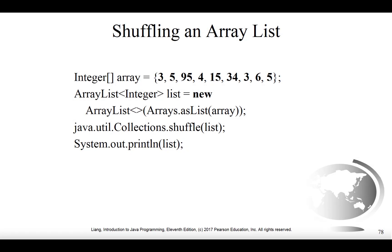Finally, we demonstrate one last method in Collections — the shuffle method. This program is essentially identical to the previous sort example, except instead of Collections.sort we use Collections.shuffle. No output is shown on the slide because shuffle is a random operation, so it's difficult to predict what you'll see. We can say we'll get square brackets and a comma-delimited list of all the same integers in some random order — certainly not sorted. Every time you run it, the output will be different.